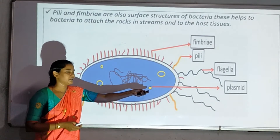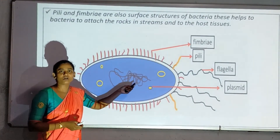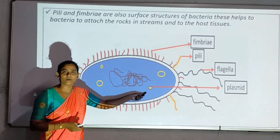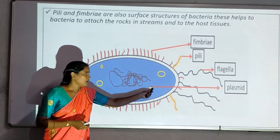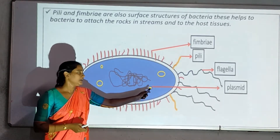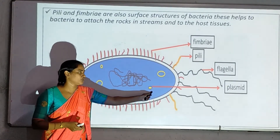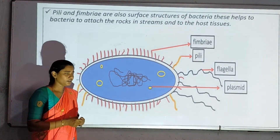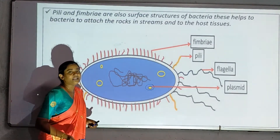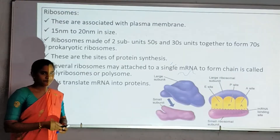Next, plasmid. Plasmid contains DNA material — genomic DNA. Extra genetic material outside the main chromosome is called plasmid. Plasmid provides antibiotic resistance to bacteria.